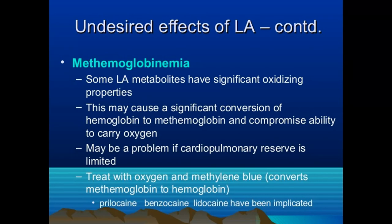Methemoglobinemia: some local anesthetic metabolites have significant oxidizing properties, causing conversion of hemoglobin to methemoglobin, which has less oxygen-carrying capacity, resulting in cyanosis. This is especially problematic in patients with limited cardiopulmonary reserve. It is treated with oxygen or methylene blue, which converts methemoglobin back to hemoglobin. Drugs that can cause methemoglobinemia include prilocaine, benzocaine, and lidocaine.